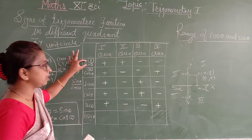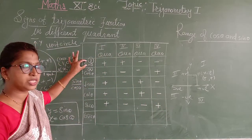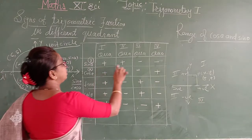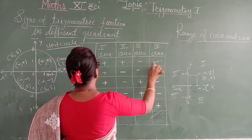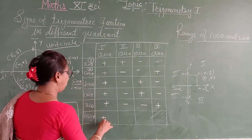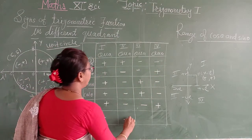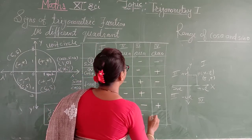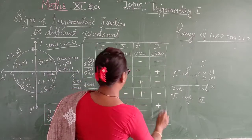Cosec θ is the reciprocal of sin θ. So cosec follows the same sign as sin θ: positive in the first and second quadrants, and negative in the third and fourth quadrants.